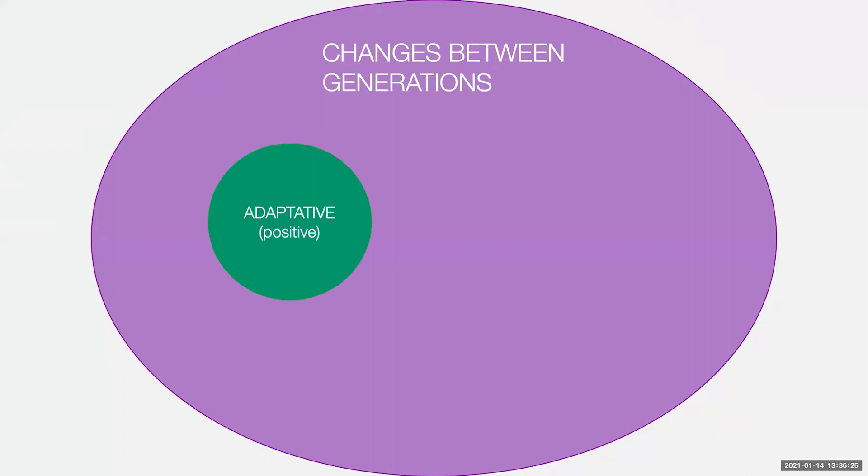They can be adaptive, so they're positive. That's anything that helps the virus to reproduce more or live longer. For example, host immune evasion, using host resources better, anything like that.